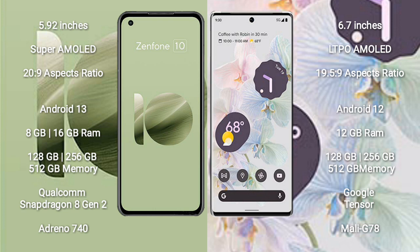Asus Zenfone 10 runs on the Android 13 operating system. Google Pixel 6 Pro runs on Android 12. Asus Zenfone 10 comes with 8GB or 16GB RAM and 128GB, 256GB, or 512GB internal storage.